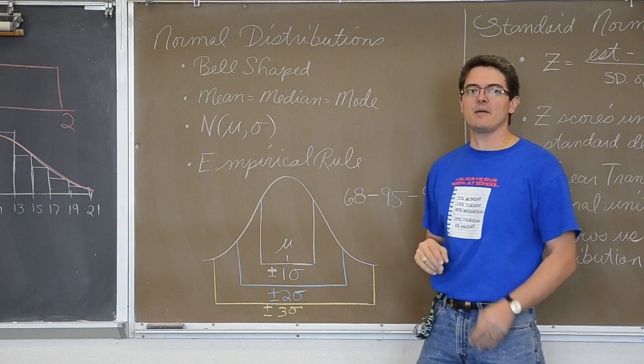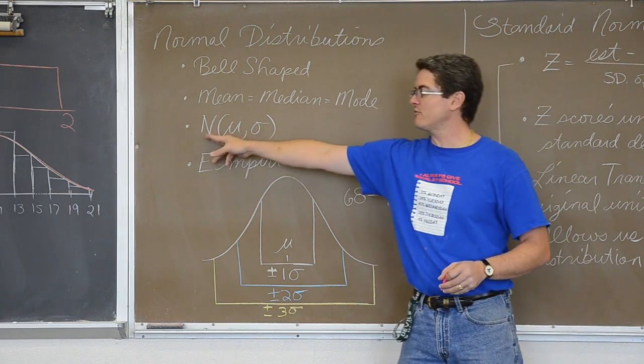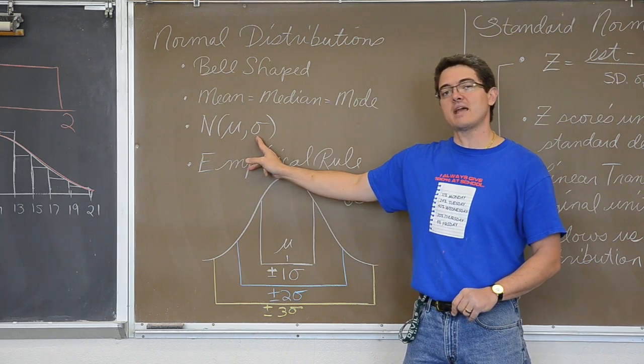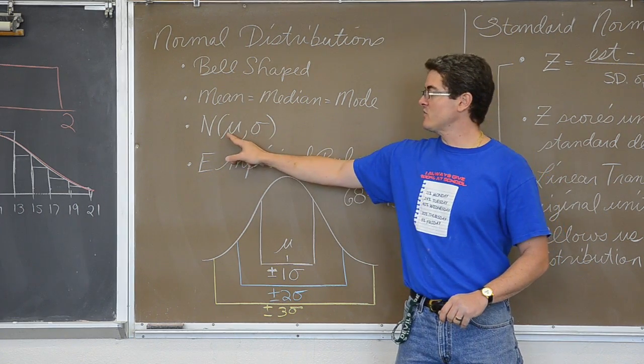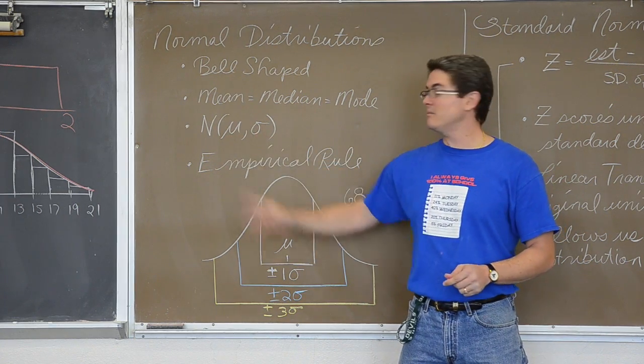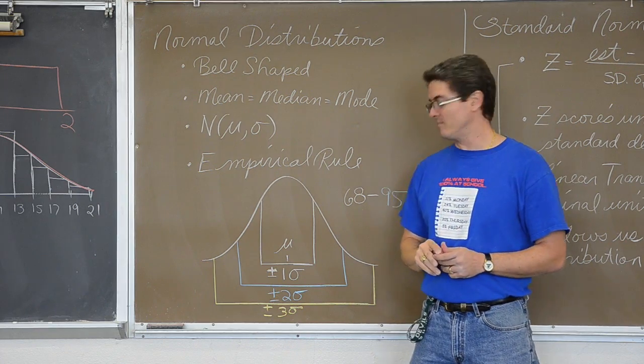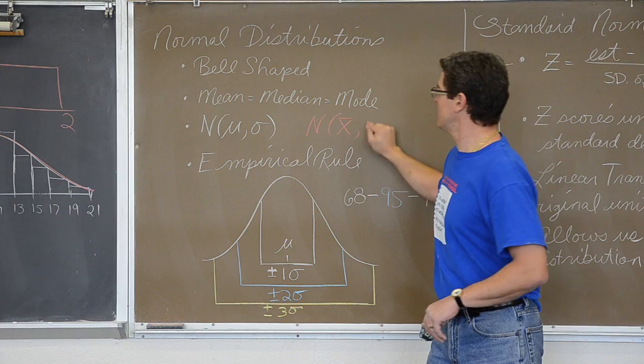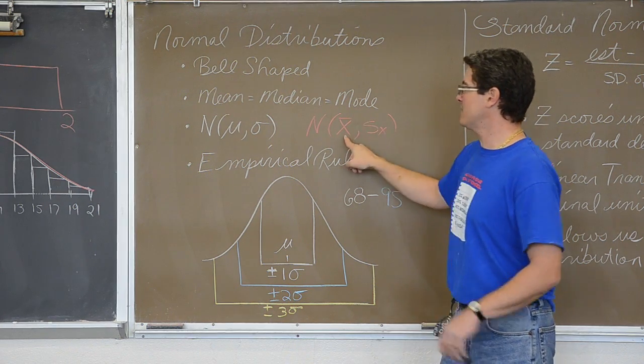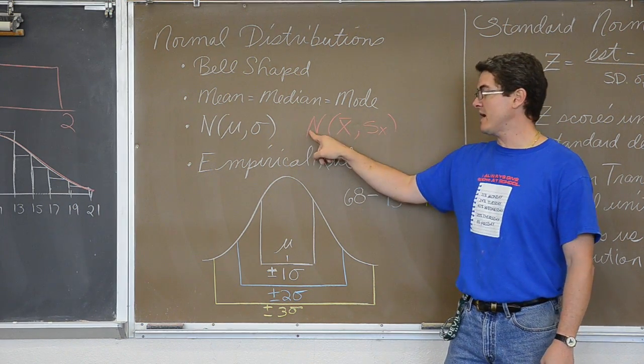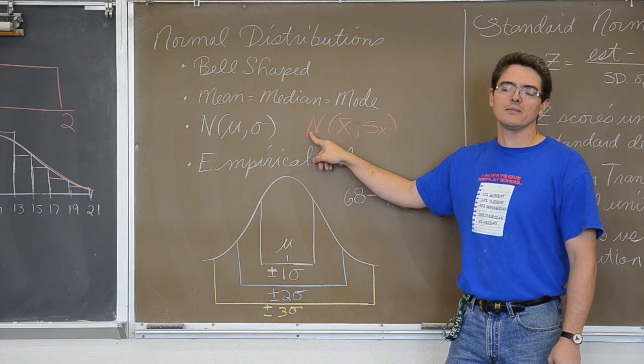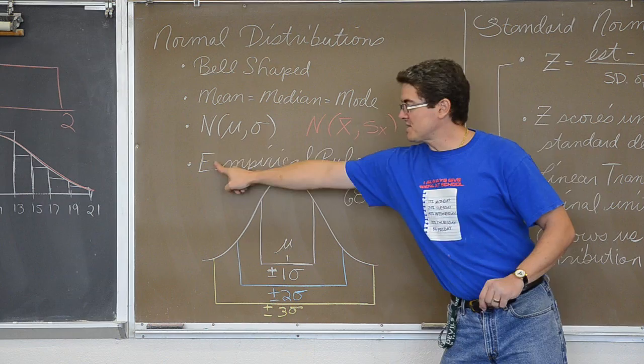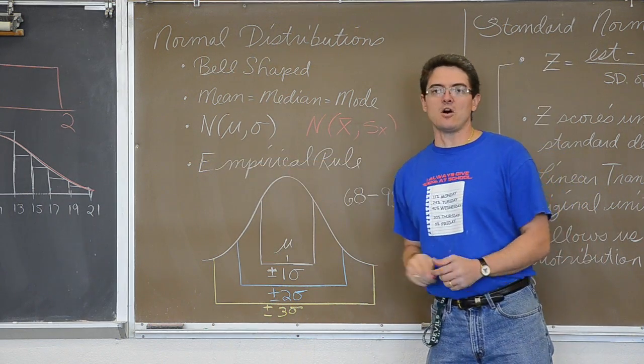When you have a normal distribution, this is shorthand notation for describing a normal distribution: capital N for normal, two numbers in parenthesis. The first number will be the mean and the second number will be the standard deviation. If I am using μ or σ, I am talking about mean and standard deviation of a population. If I use x̄ and sx, I am talking about the mean of a sample and the standard deviation of a sample, but yet that sampling distribution is still normal.